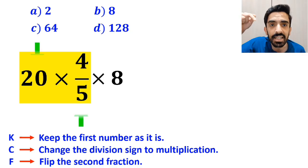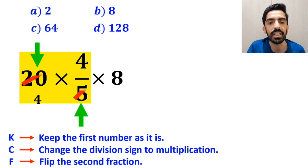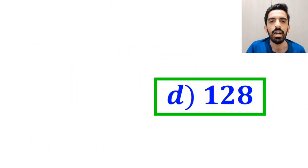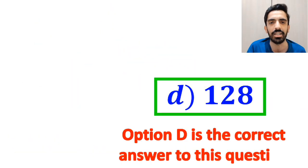Alright, as you can see on the screen, the number 20 simplifies with the 5 in the denominator. And instead of this expression, we can write 16 multiplied by 8, which ultimately gives us the answer 128. Therefore, option D is the correct answer to this question.